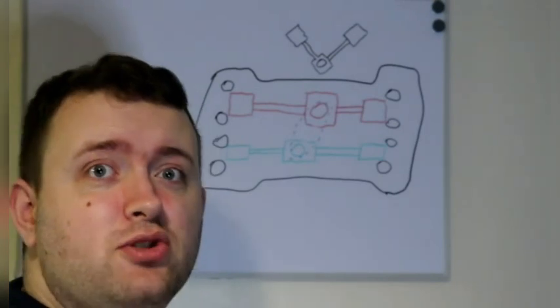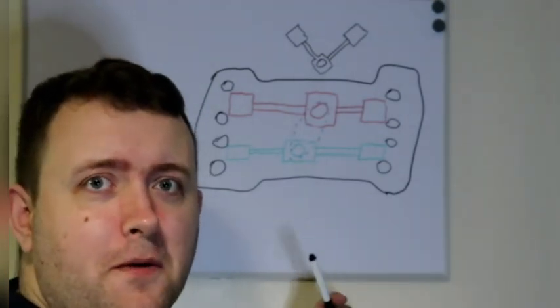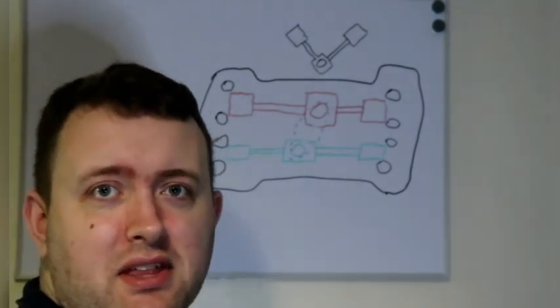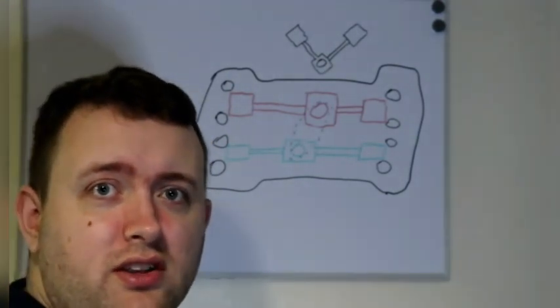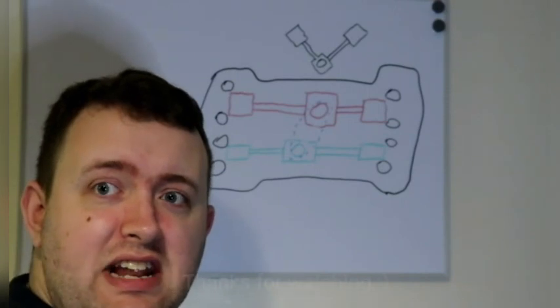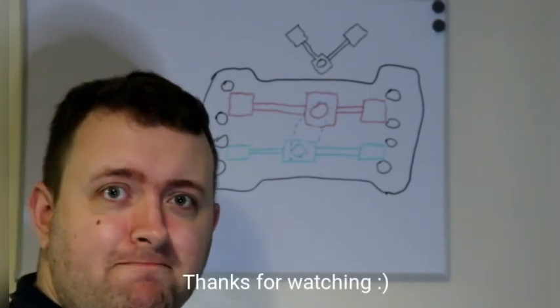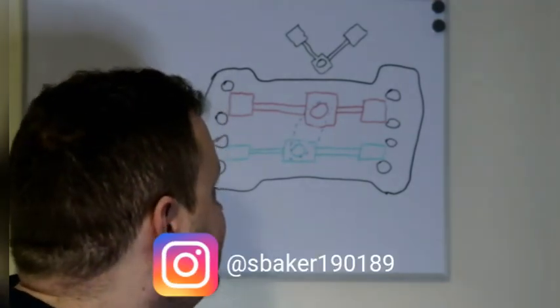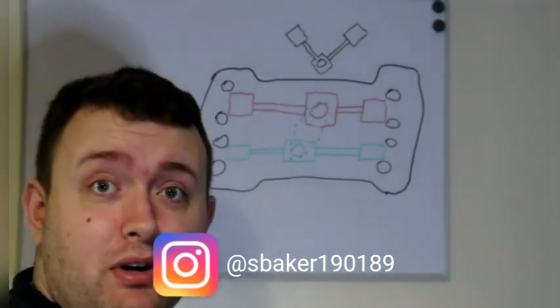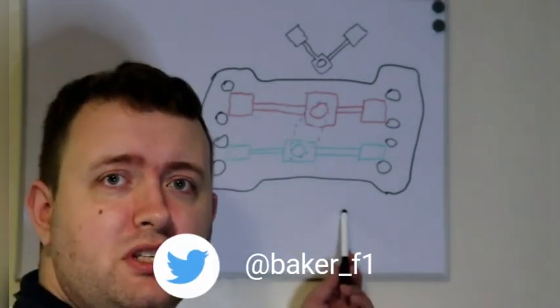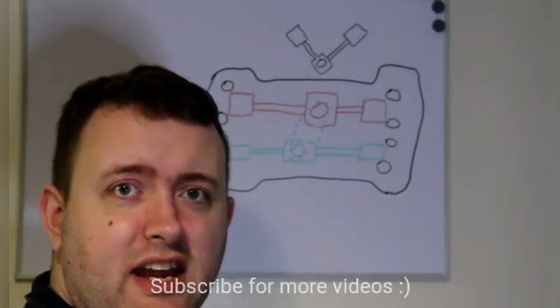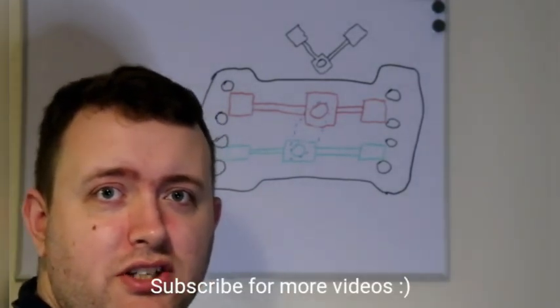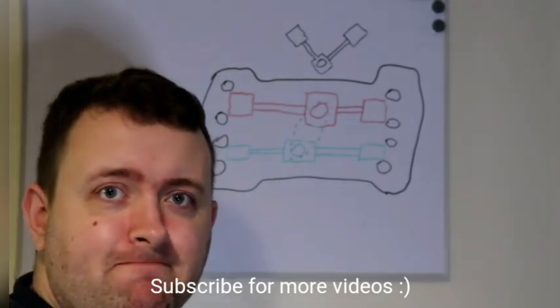And only a driver of Jim Clark's fast yet mechanically sympathetic driving style could have got this hefty lump to victory. And like I said in a previous video, it was the only time a 16-cylinder engine scored a victory in Formula 1 history. Do you agree? I agree.